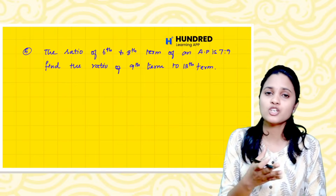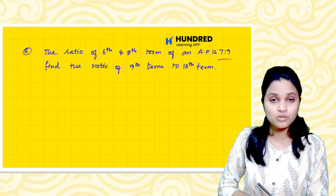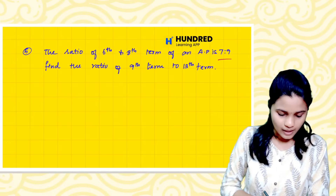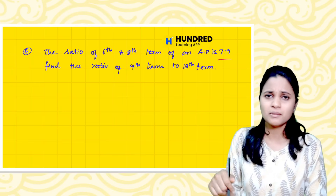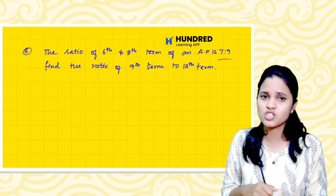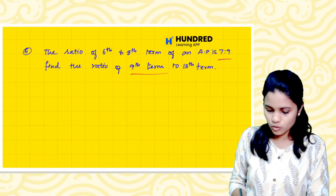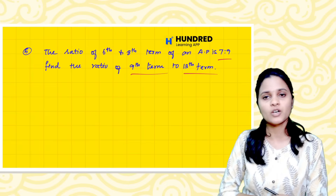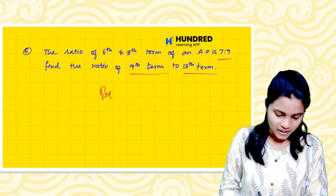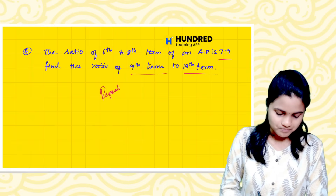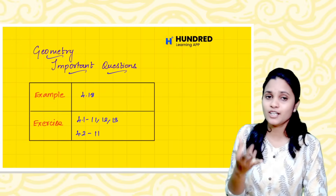In AP, use A by R, A, AR. Next, you can find the ratio of the 6th and 8th term of an AP which is 7 to 9. From the ratio of 6 by 8, find the ratio of the 9th to 13th term. You can repeat this question and practice geometry.